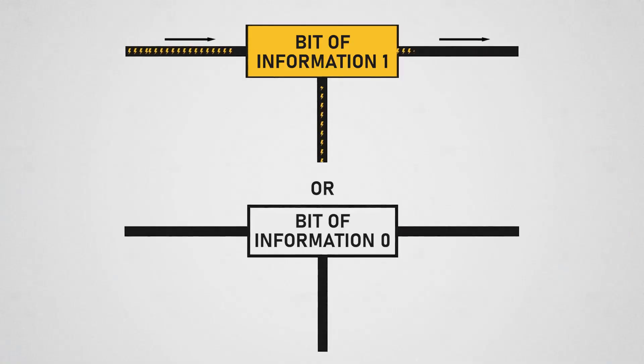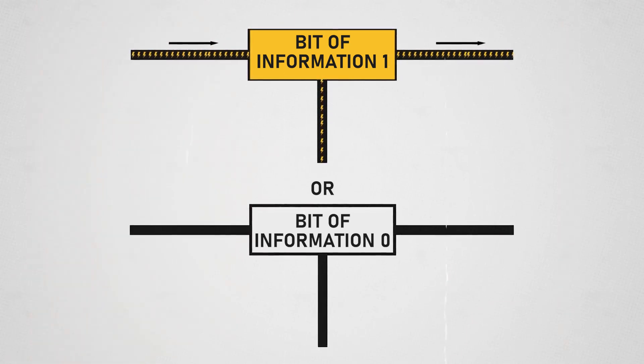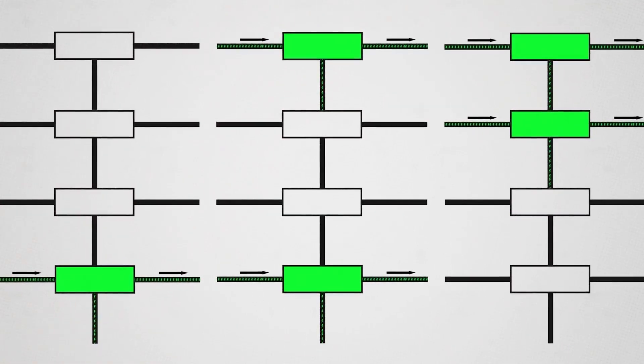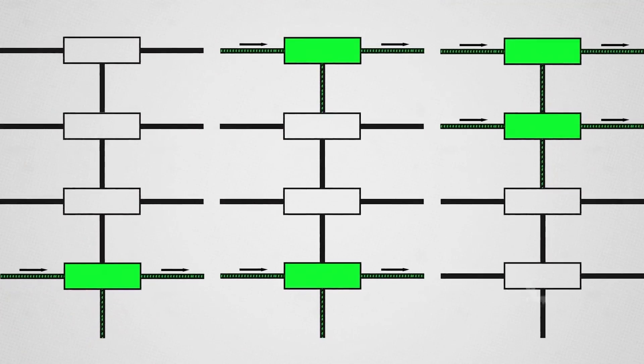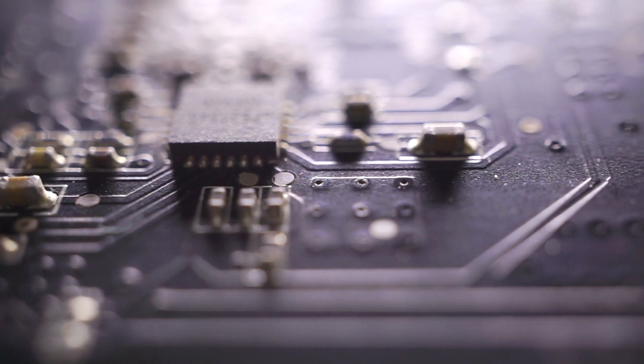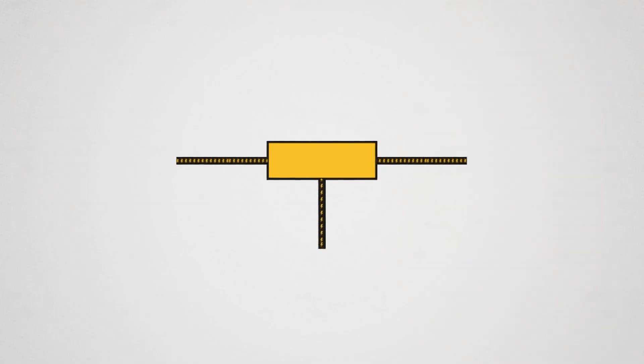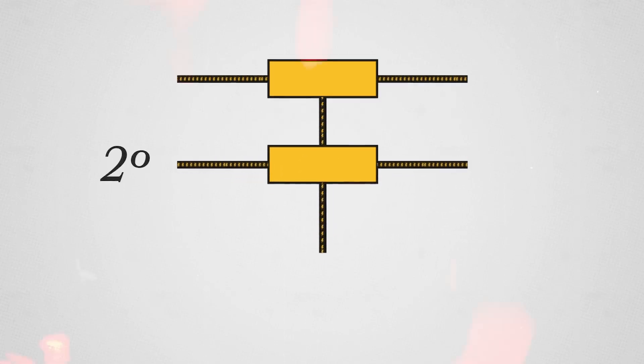The electric current passing through a transistor can be associated with a bit of information, a value that can be 1 or 0. Computing involves manipulating these 1s and 0s associated with currents passing through transistors. And this is done by controlling the state of one transistor with another transistor. In other words, the electric current that determines the value of a transistor is determined by a second transistor, which can also be 0 or 1.